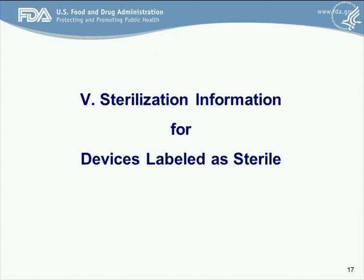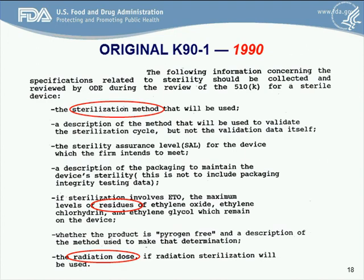That leads us to Roman numeral five of the guidance document — sterilization information for devices labeled as sterile. Going back to 1990, the very first guidance document, we were looking at a number of items: the sterilization method, the method used to validate the sterilization cycle, the sterility assurance level, the description of packaging designed to maintain the product's sterility, ethylene oxide residuals if applicable, whether the product is labeled pyrogen-free and the method used to make that determination, and the radiation dose if radiation is used.